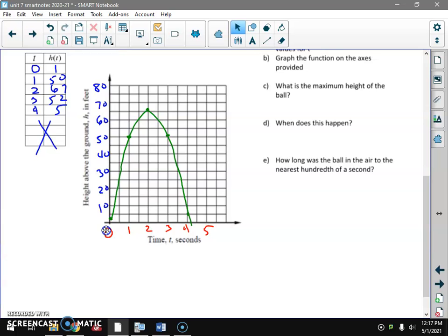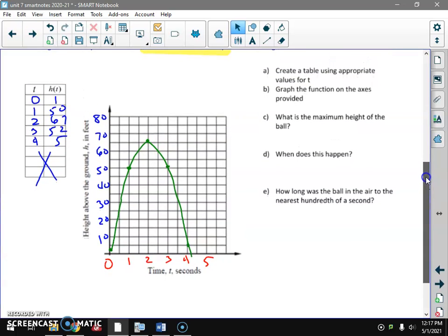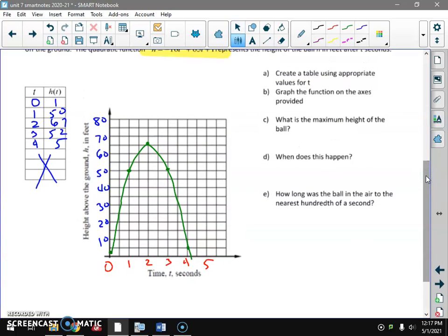I'm going to answer a couple questions off of this graph. Did we create our table? Check. Did we graph the function? Check. What's the maximum height? What's the highest the ball ever reached? If I looked on my table, I would say it's 67 feet high. When did this happen? At time two seconds. Two seconds after she kicked it, it reached its high point.